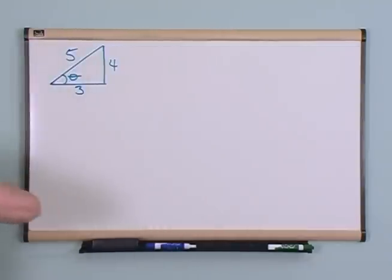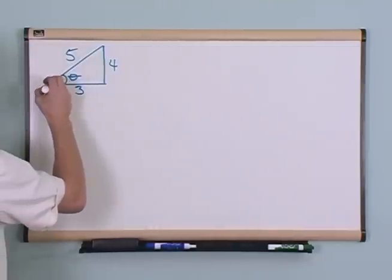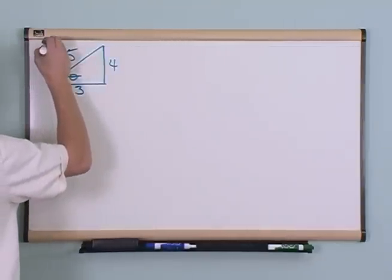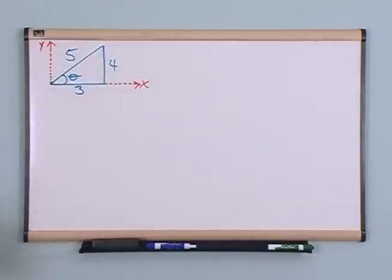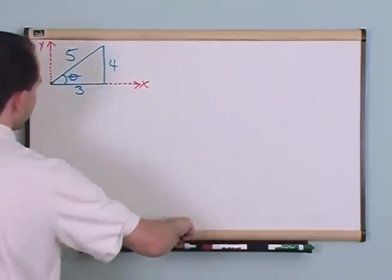And just for kicks, I'm going to draw a dotted line that's going to be a y-axis and an x-axis. So this triangle really is just sitting on the x-y grid right here.